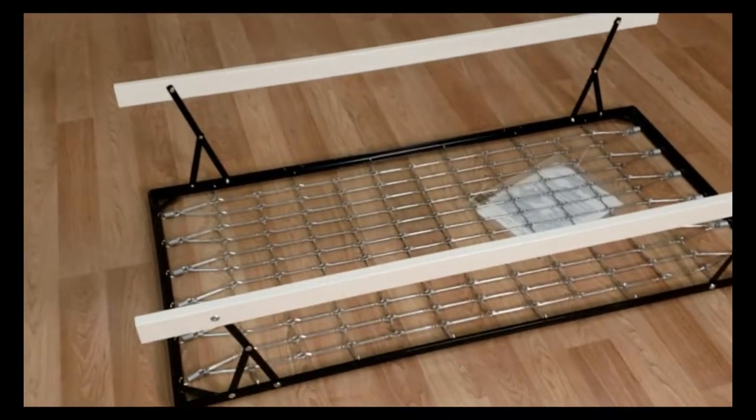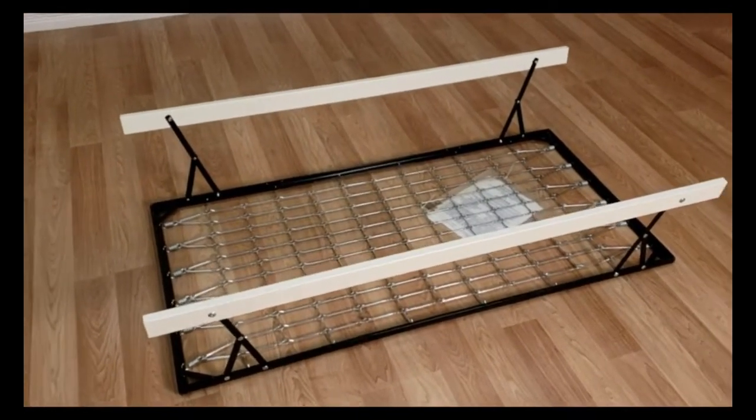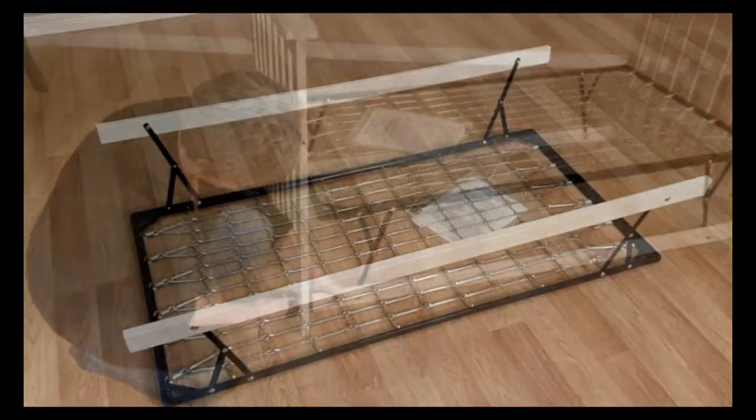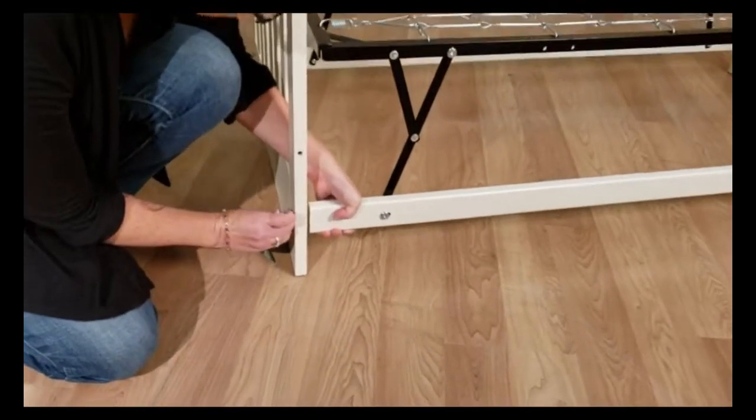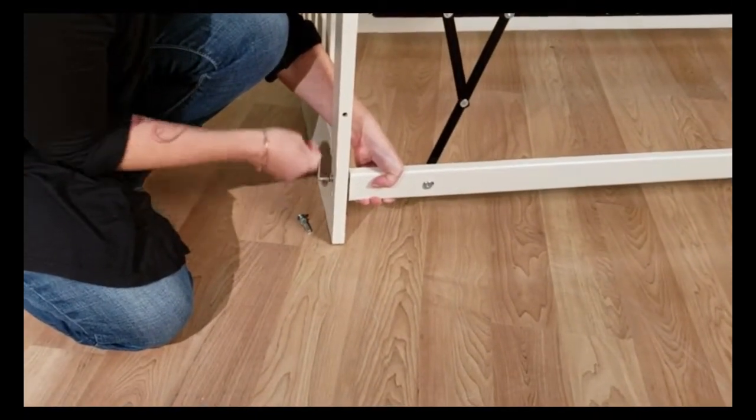Here's what the assembly looks like with both spreader bars installed. Next, install the crib sides using two bolts in each corner.